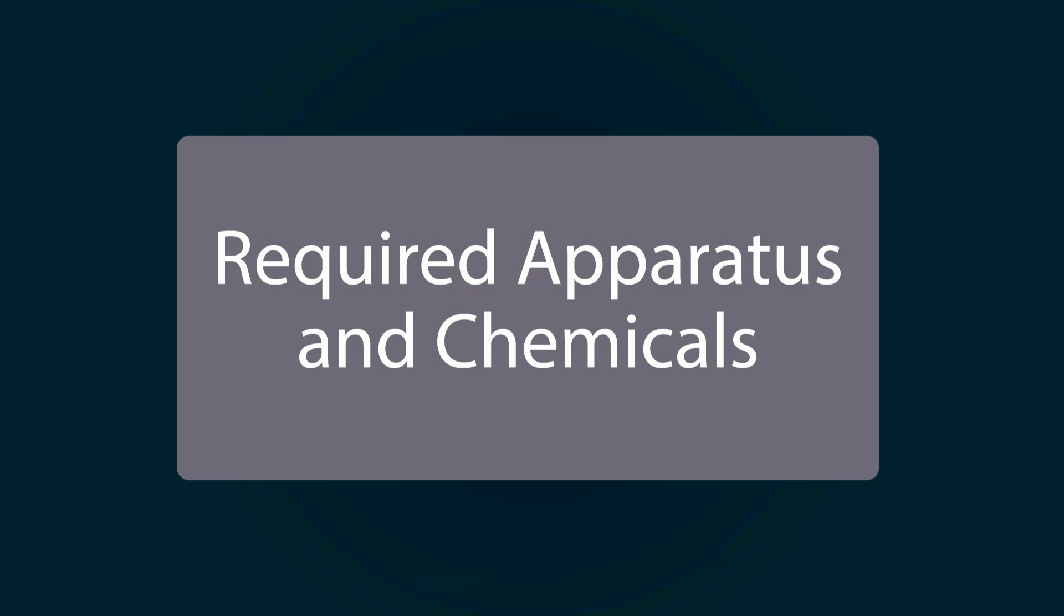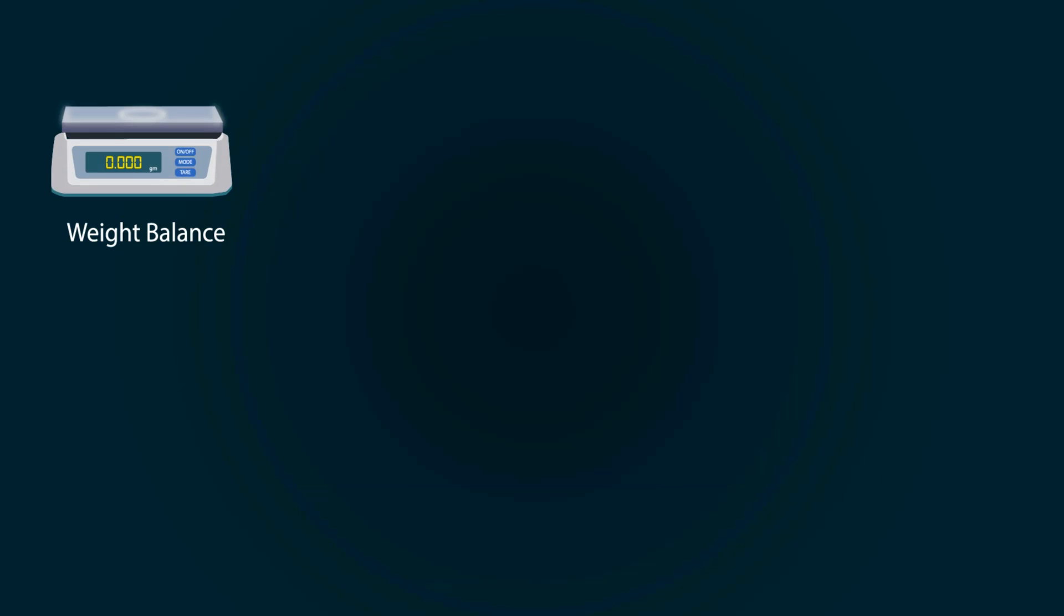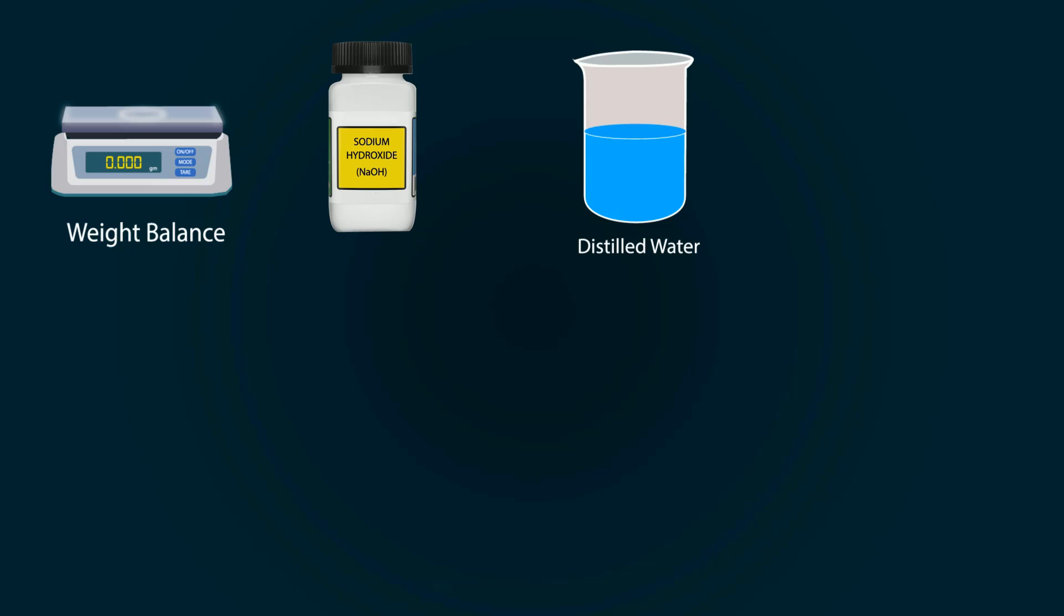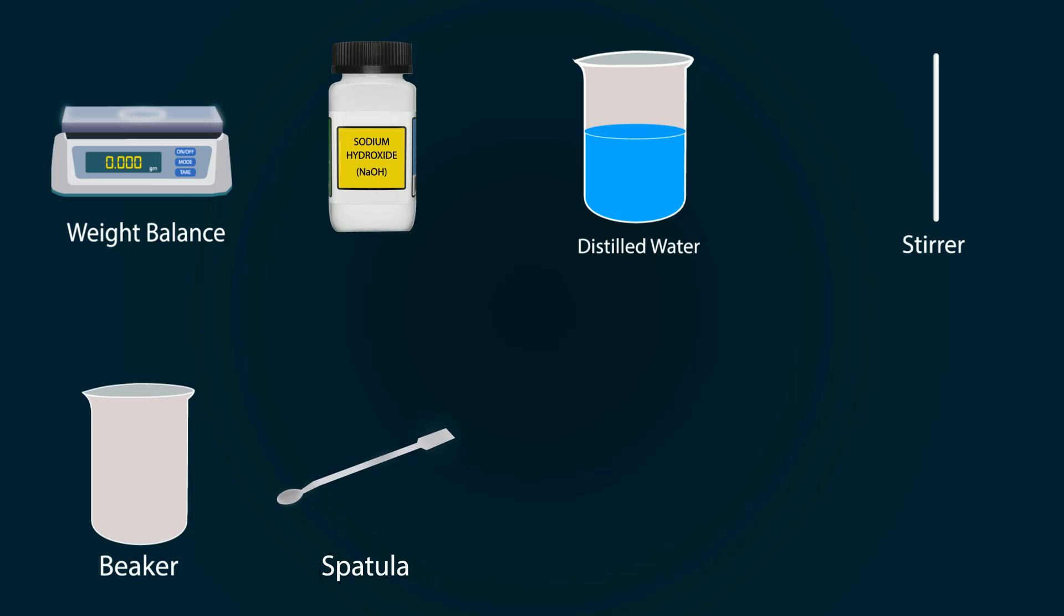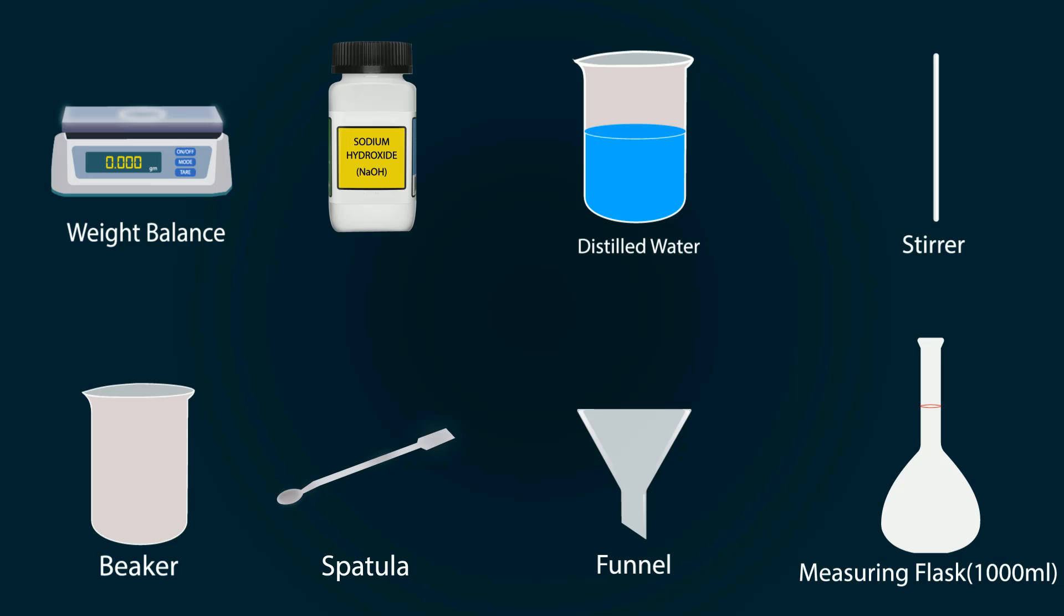Required apparatus and chemicals are: a weight balance, sodium hydroxide, distilled water in a beaker, stirrer, empty beaker, spatula, funnel, and a volumetric flask of thousand milliliters. Let's do some calculations.